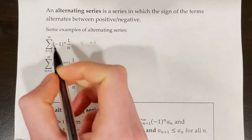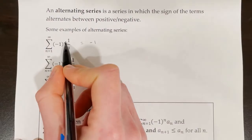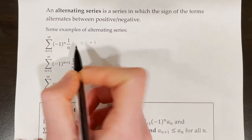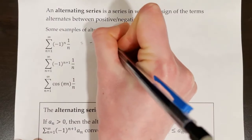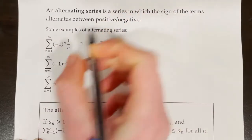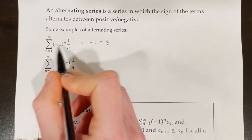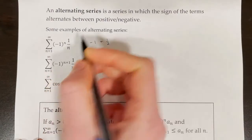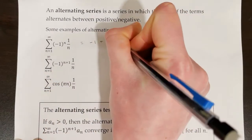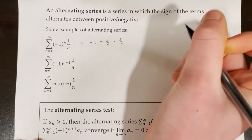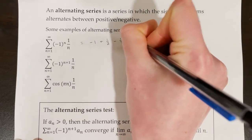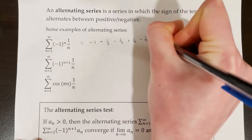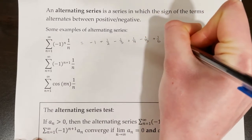Then if we plug in n equals 2, we would have negative 1 squared, which makes positive 1 times 1 over 2. That next term is going to be plus 1 half. Then if we plug in n equals 3, we have negative 1 cubed, which is negative 1 times 1 over 3, giving minus 1 third. This pattern continues: plus 1 fourth, minus 1 fifth, plus 1 sixth, etc.